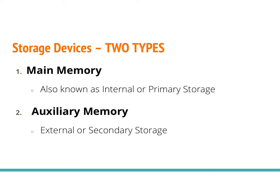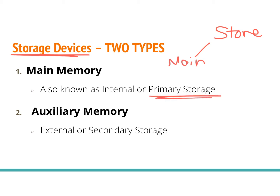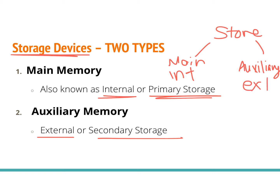Now that we've looked at the CPU and the main processing components, let's look at the main storage devices. There are two main types of storage on your computer. There's main memory, which is your primary storage and it's internal to the computer. And then you also have auxiliary storage, which is external or secondary.